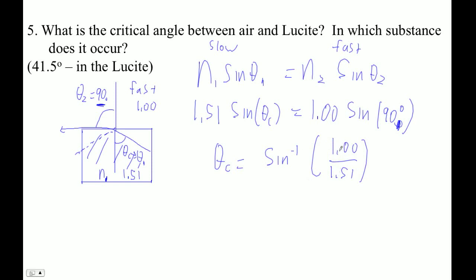the fast one on top and the slow one on the bottom, because that gives you, inside the parentheses, a number less than 1, and that's the only thing you can take an inverse sine of. So you can never get the wrong angle by getting the indices of refraction in the wrong place. You'll just get an undefined answer on your calculator if you try to find the inverse sine of a number bigger than 1.